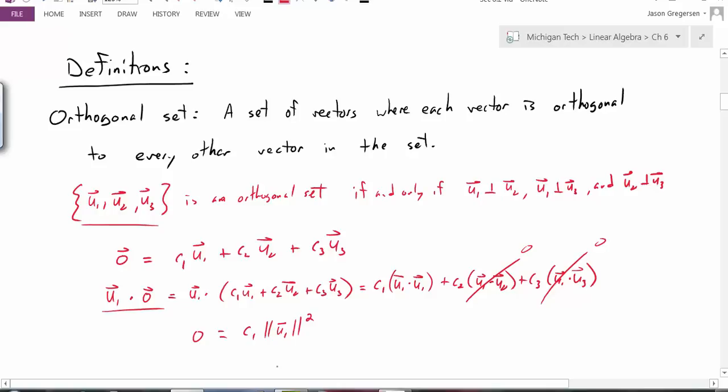But we have to first take the fact that these u1, u2, and u3 are all non-zero vectors. Now if they're non-zero vectors, then this cannot be equal to 0. It has to be strictly greater than 0 if u1 is not actually equal to 0. If that's true, that would tell me that c1 is equal to 0. So this would tell me c1 has to be equal to 0.